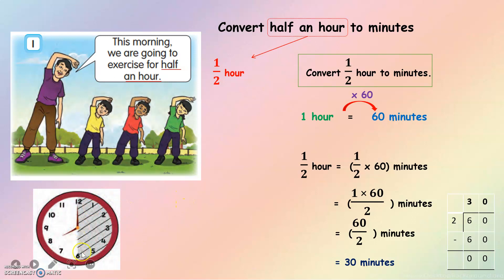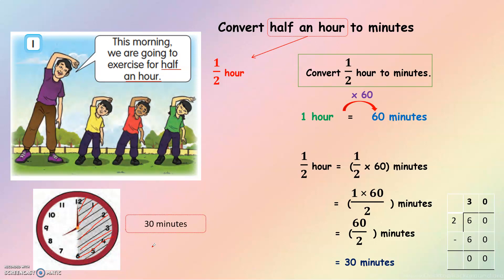This is the second strategy to answer the question. We can use a clock and shade it according to the fraction given. For half, we shade the clock to half. Counting the minutes: 5, 10, 15, 20, 25, 30 minutes. The answer is 30 minutes. Both answers are the same — you can use the first step or the second step.